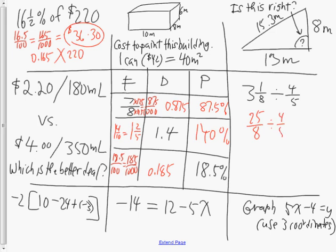We agreed the easiest way to work with division of fractions is to change it to multiplication using the reciprocal of the second fraction. So 25 eighths times 5 fourths — multiply the numerators to get 125, multiply the denominators to get 32. There are three 32s in 125, that's 96, leaving 29 remainder, so the final answer is 3 and 29 thirty-seconds.